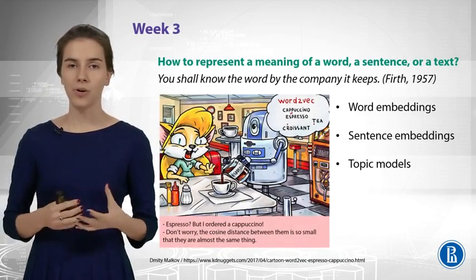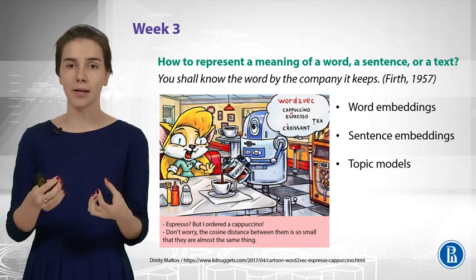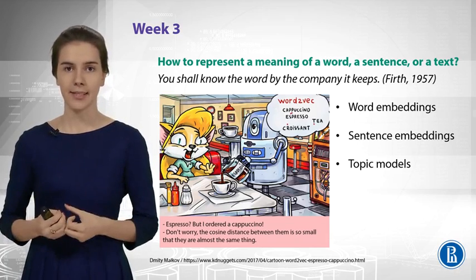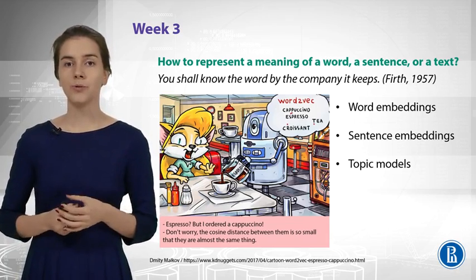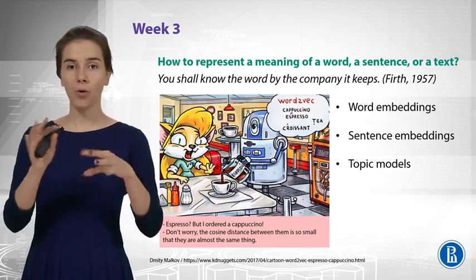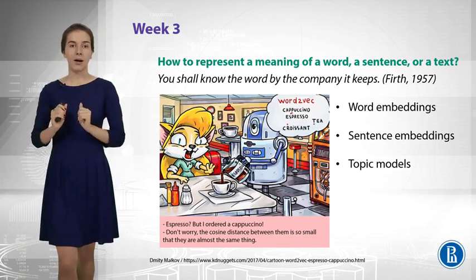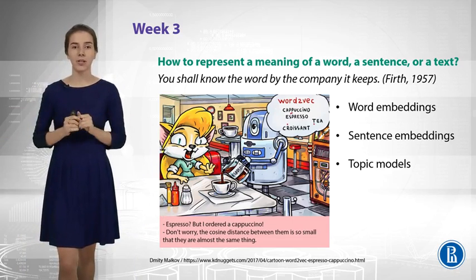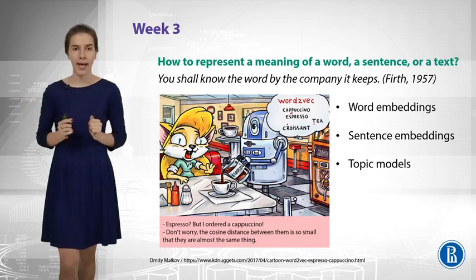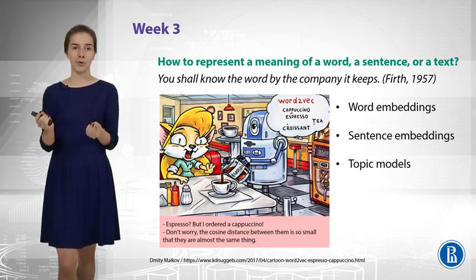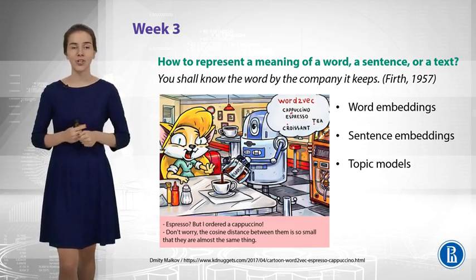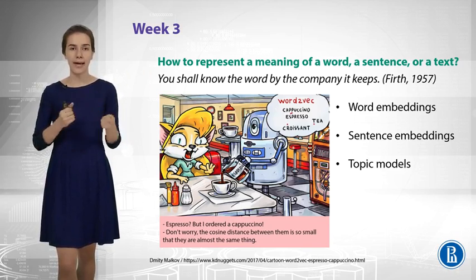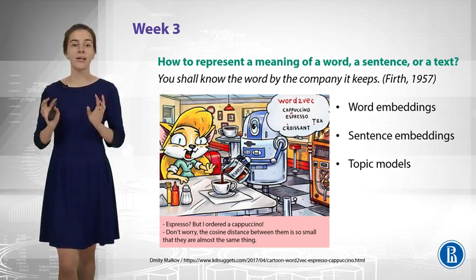We can do something even more complicated and try to understand the meaning of words or some pieces of text. How do we represent the meaning? One easy way to do this would be to use vectors — you map all the words to some vectors, let's say 300-dimensional vectors of float numbers. These vectors will have really nice properties: similar words will have similar vectors. For example, this nice picture tells you that cappuccino and espresso are essentially the same thing, just because the cosine similarity between their vectors is really high.